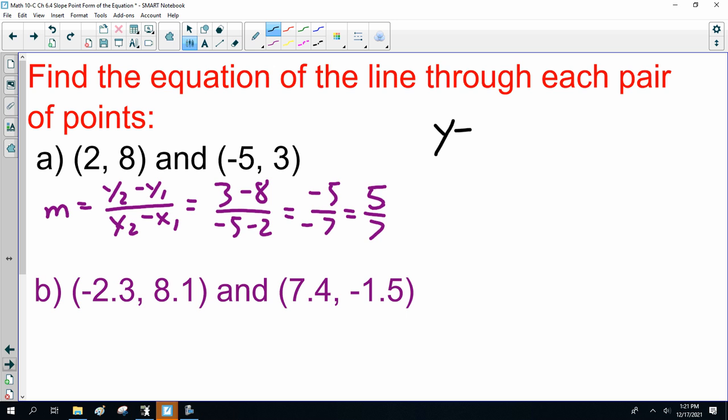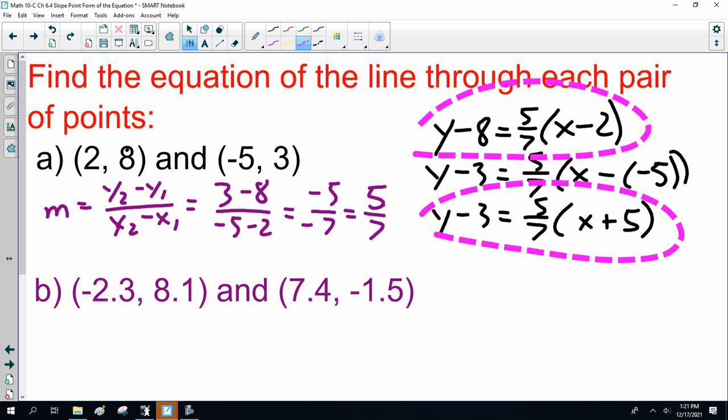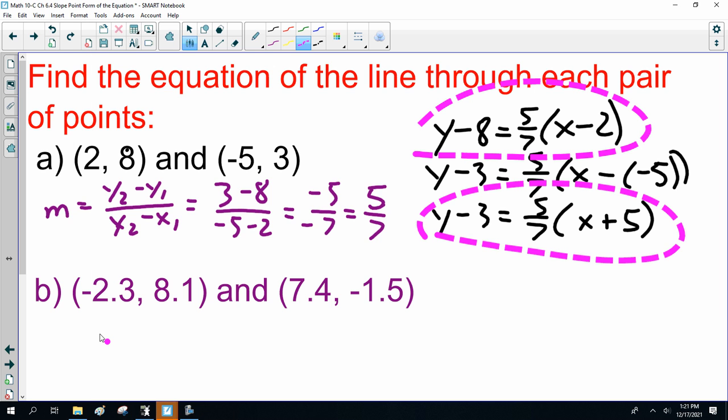Y minus 8 equals 5/7 times x minus 2. Or, y minus 3 equals 5/7 times x minus minus 5. So, there we go. Our two equations should be identical. Same slope, and if you graph them, they should be the same. I'm just not going to because I'm lazy. And I'm getting way too old, because I've got to get through this.